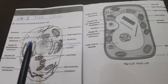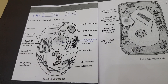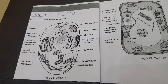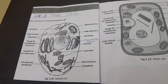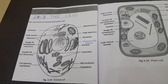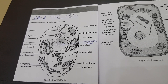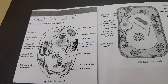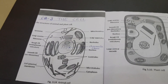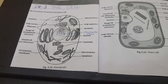The functions of Golgi bodies are: they help in the secretion of certain hormones and enzymes, they help in the formation of cell wall in plant cells, and they are also involved in transportation of substances within the cell.